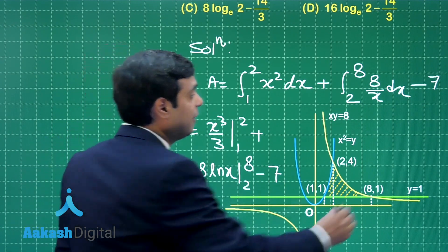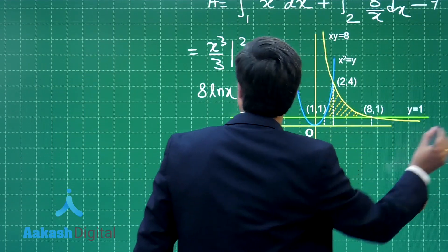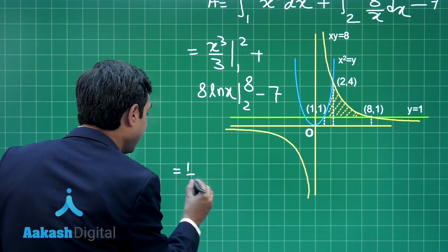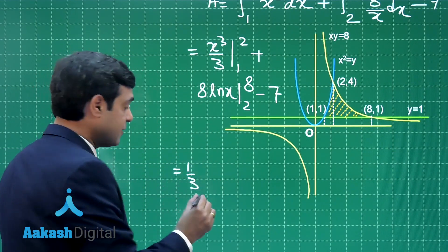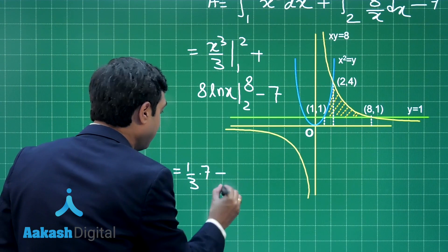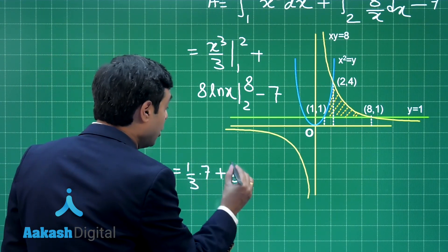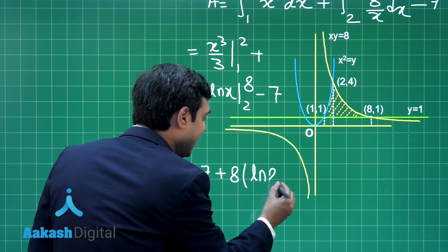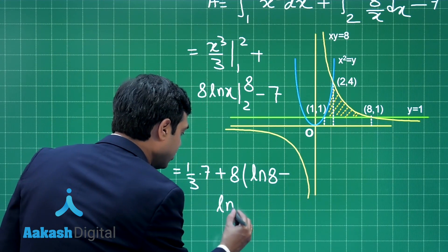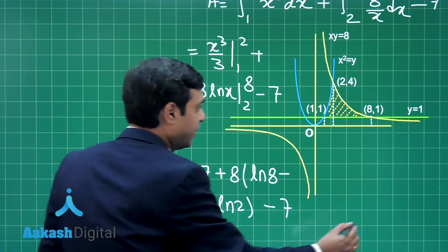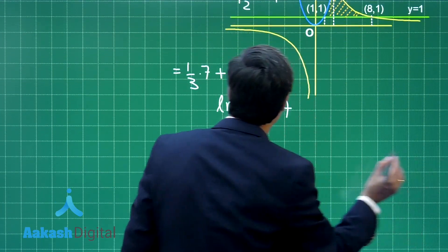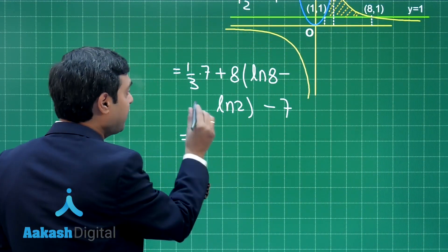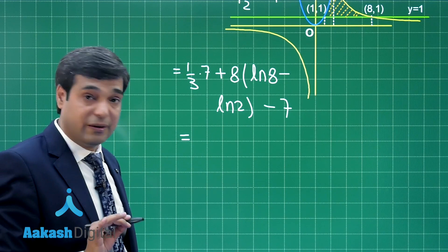I am sure this area is clear. Let us simplify this area. So, here we are getting 1 by 3 times 8 minus 1 that is 7 plus 8 log 8 minus log 2, log 8 minus log 2 minus 7. Moving ahead, we can write it as 7 by 3 minus 7, this point is clear.